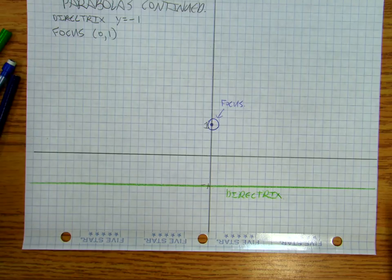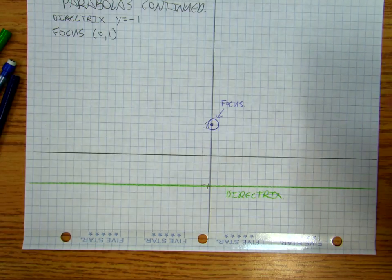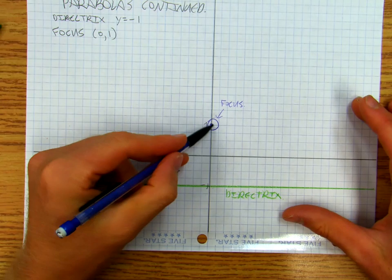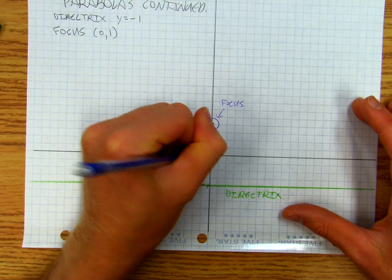And then halfway between them, and I've made it really, really simple on this one, so halfway between the focus and the directrix is the vertex. So there's my vertex.